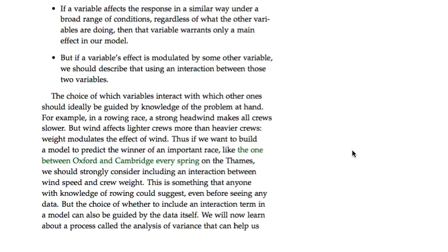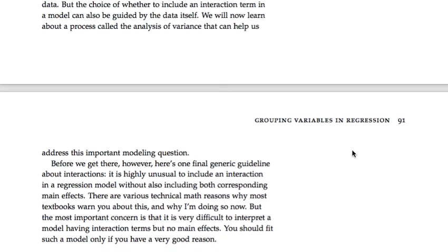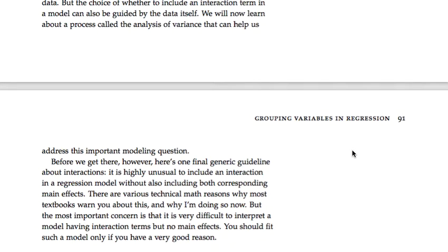All right. So that closes off the introduction to interaction terms right there. And I'll give you one final generic guideline about interactions. We basically never include interaction terms in a model without also including both corresponding main effects. There's a bunch of technical reasons why you would do that, and we're not going to go into the technical reasons. Basically, the important thing here is that it makes the model extremely difficult to interpret if you do this. So a generic guideline, unless you really know what you're doing, you should only ever include an interaction in a model, even contemplate including in a model if you've got both main effects in there already.